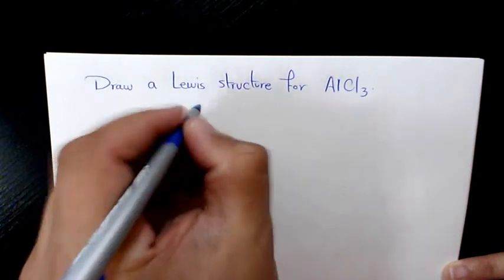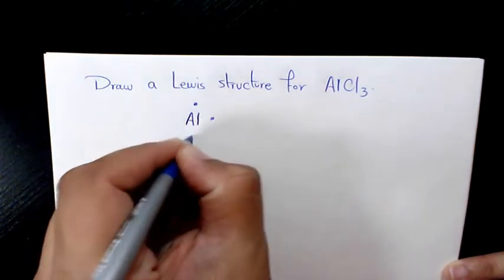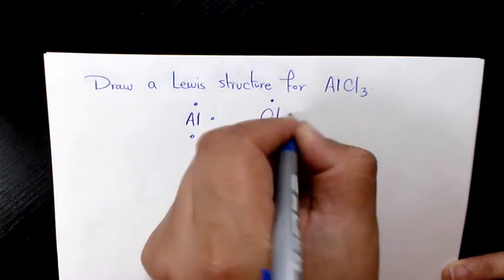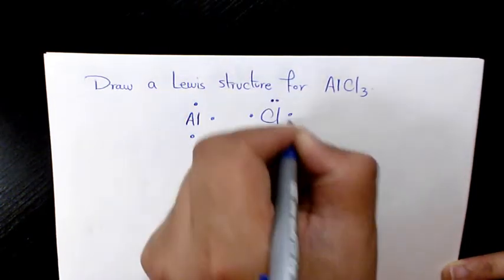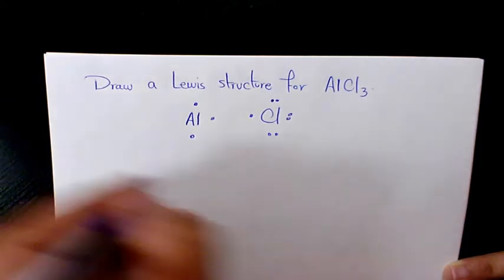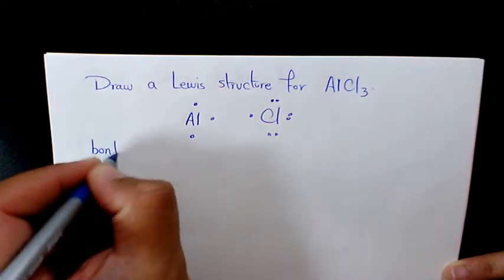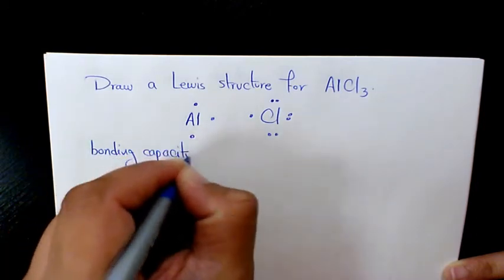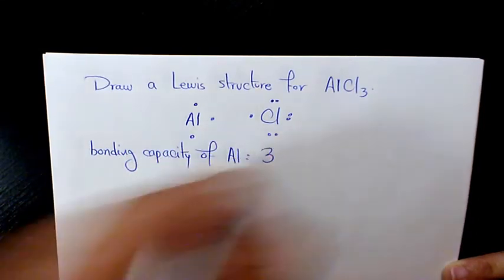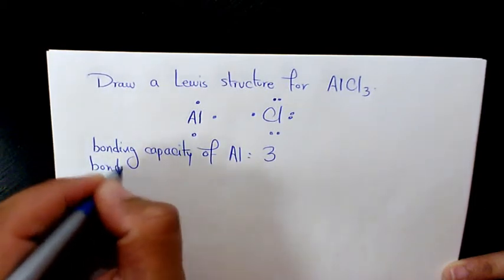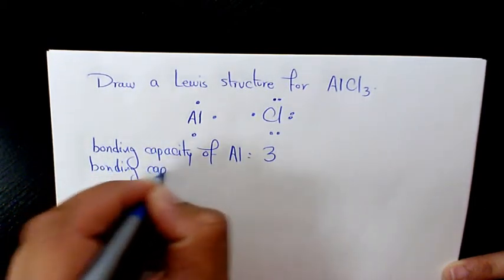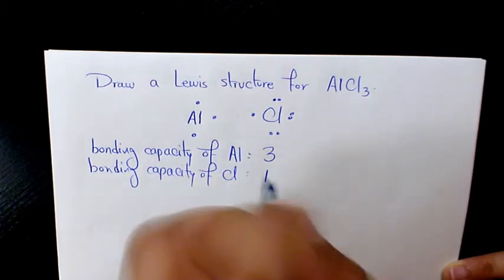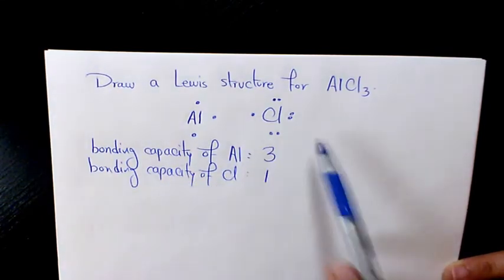So Aluminium has three valence electrons and Chlorine has seven valence electrons. The bonding capacity of Aluminium is three, and the bonding capacity of Chlorine is one, because we have only one electron available for bonding.